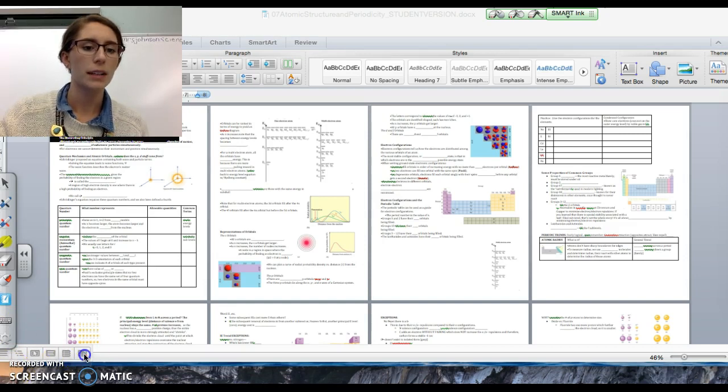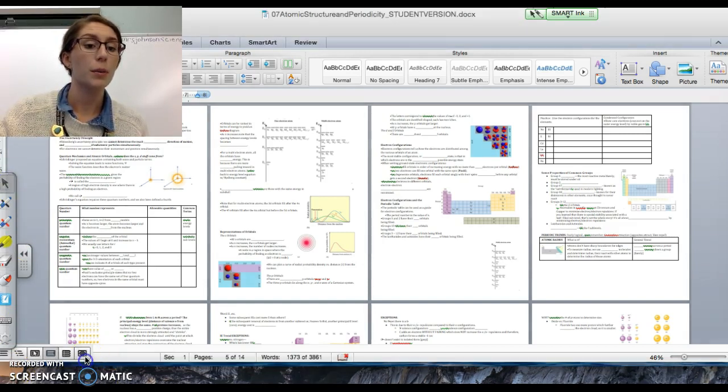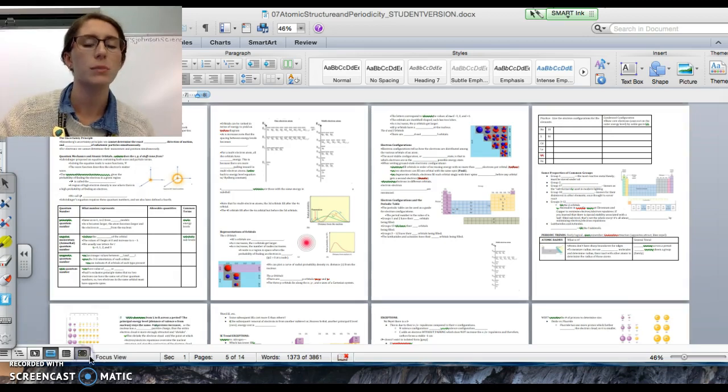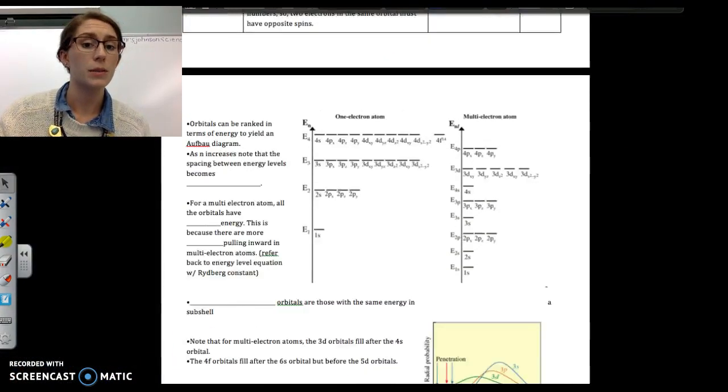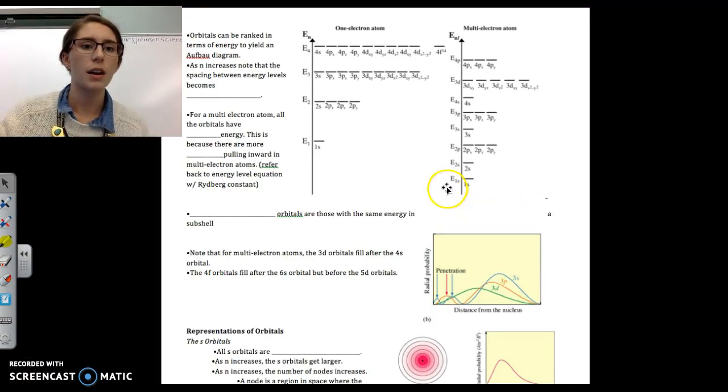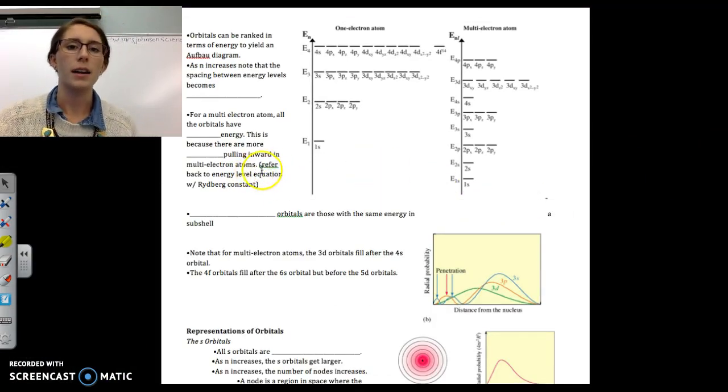What we left off talking about in class were the principal quantum numbers. So we have four principal quantum numbers, and we use those to describe at least as best we can the location of an electron or electrons in an atom.